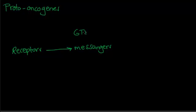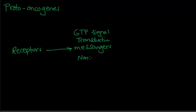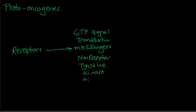The messenger signaling that is really important in the case of proto-oncogenes — you need to know there is a signal called GTP signal transduction, and another example of messengers is non-receptor tyrosine kinase activity.